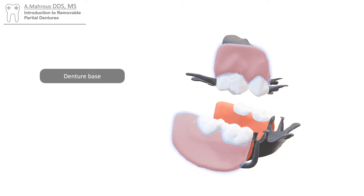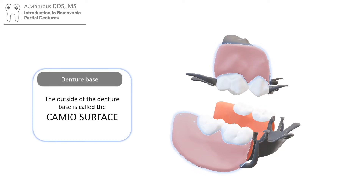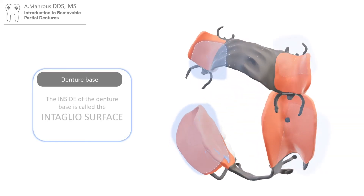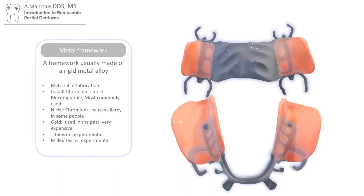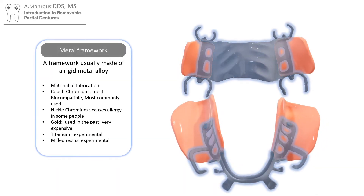The outer surface of the denture base is called the cameo surface. The internal surface is called the intaglio surface. The metal framework is underneath.